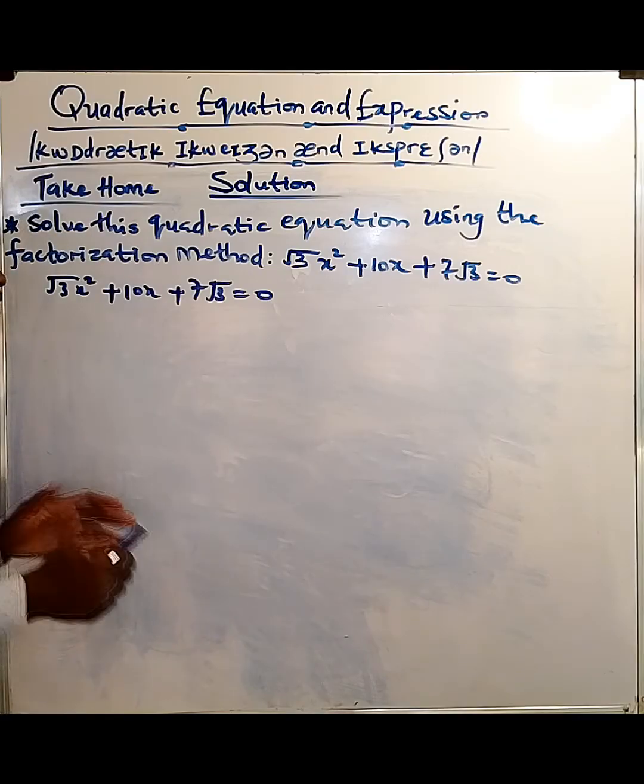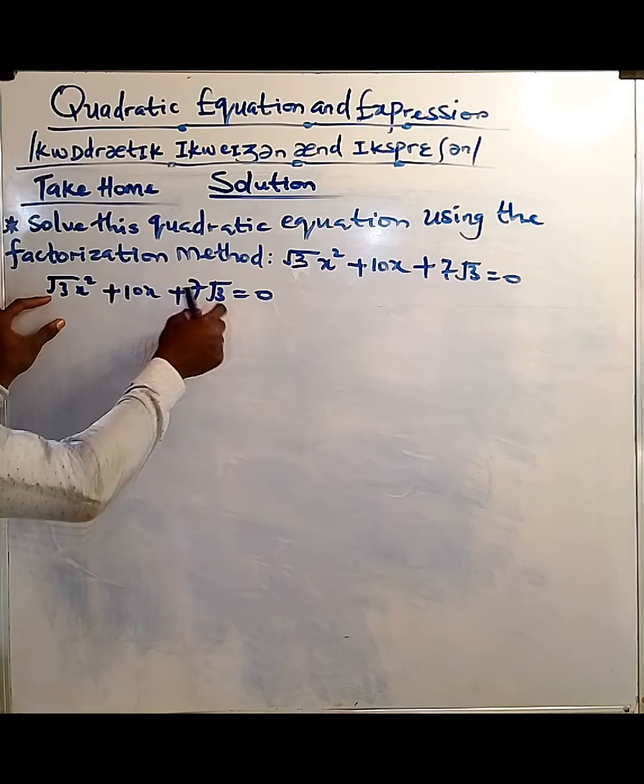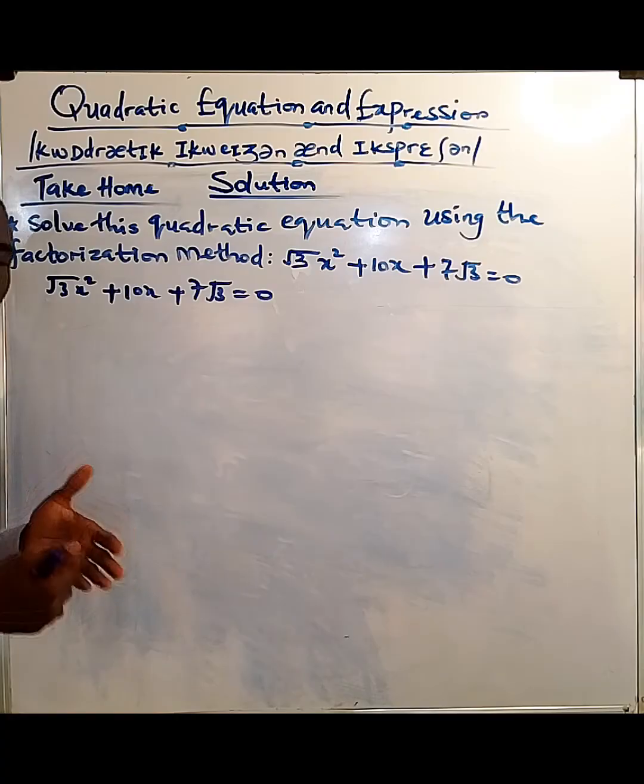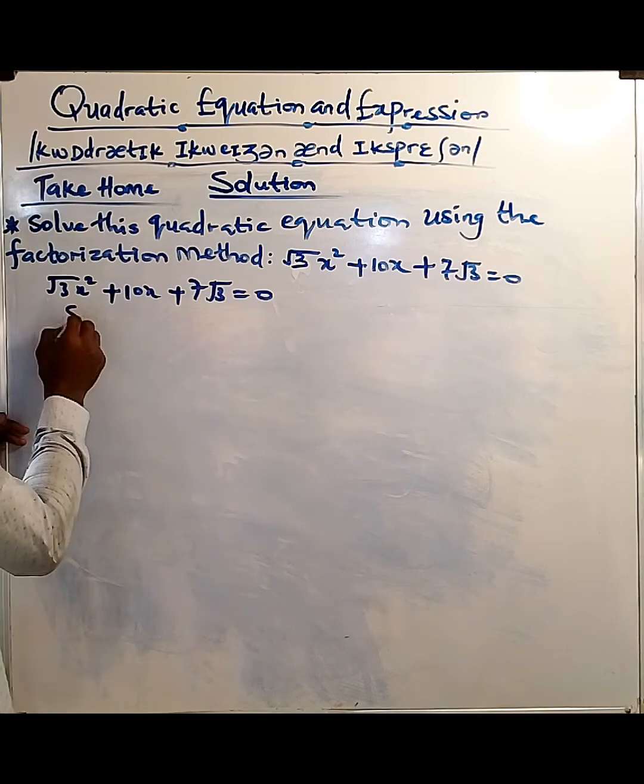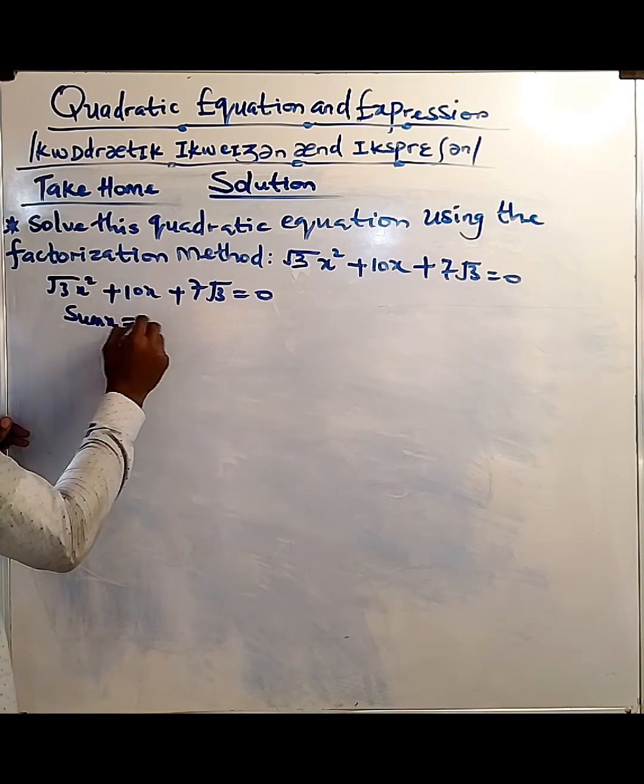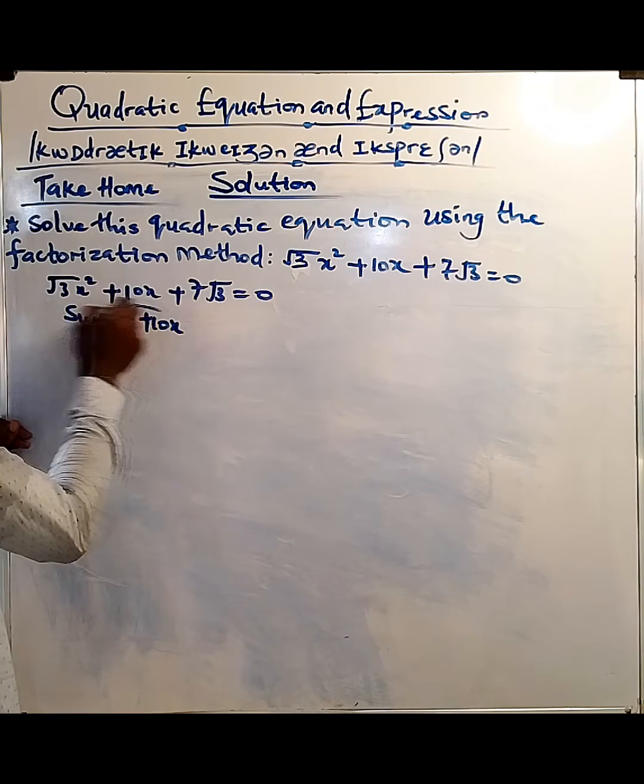But this time around, we are very lucky for the fact that the a and the c came in the form of surd. This is a pure surd, this is a mixed surd. So what do we do? The sum is right in the middle. The sum is +10x. As you can see, the sum is right there.